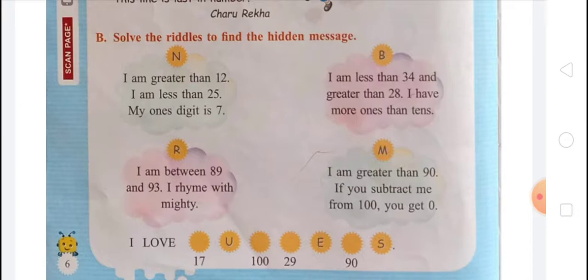Now on the bottom side, the hidden message is decoded. For 17 the alphabet is N, for 100 the alphabet is M, for 29 the alphabet is B, and for 90 the alphabet is R. So the hidden message spells out N-U-M-B-E-R-S — I love numbers!